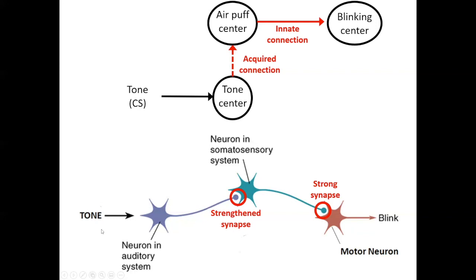In the future, when the auditory neuron fires, its now-strong connection with the somatosensory neuron will cause that somatosensory neuron to fire too, which in turn will make the motor neuron fire, and the subject will blink. So the tone, that once neutral stimulus, could become a conditioned stimulus and acquire the capacity to elicit blinking by using the air puff sensory neuron as a sort of intermediary. One strength of stimulus substitution theory is that it is compatible with the Hebb rule, which is a well-established principle in neuroscience.